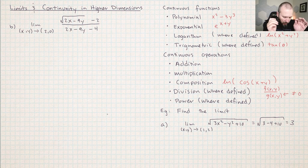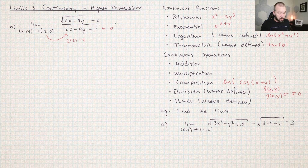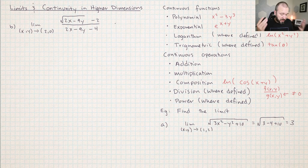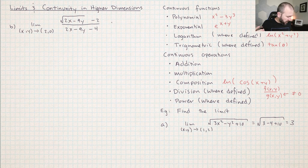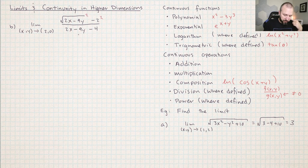In this example, it looks like I have a bunch of continuous functions combined using continuous operations, but I don't. Be careful — if you plug this in, this will be 2 times 2 minus 4, which makes the entire denominator zero. So I can't conclude from the theorems that this is a continuous function, and I just can't plug stuff in — I would get a zero-over-zero situation. The trick here — and be on the lookout for this — there are a lot of problems in this unit that involve conjugates. Observe that if I squared everything in the numerator, it would turn exactly into the denominator.